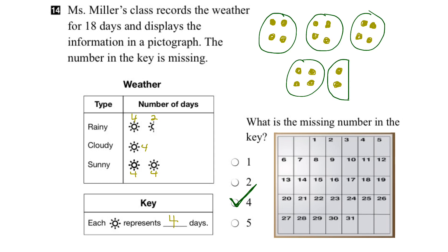Just for fun, we could do a little more analysis here. We could ask ourselves how many days of the 18 were sunny — well, there would be four plus four, or eight days that were sunny. There were four days that were cloudy, and there were six days that were rainy.